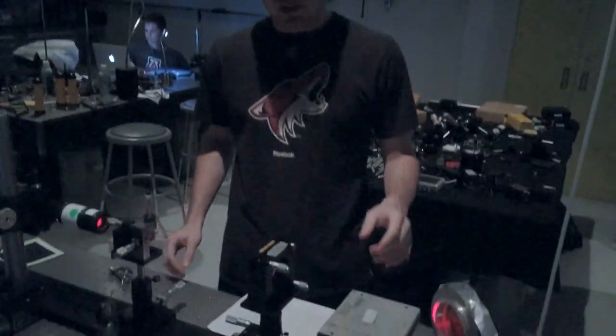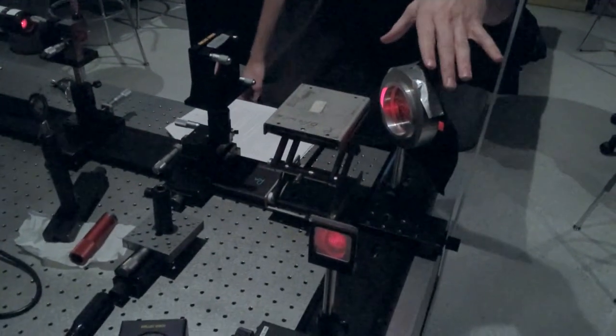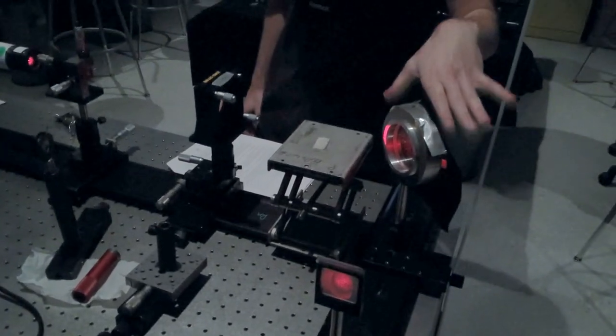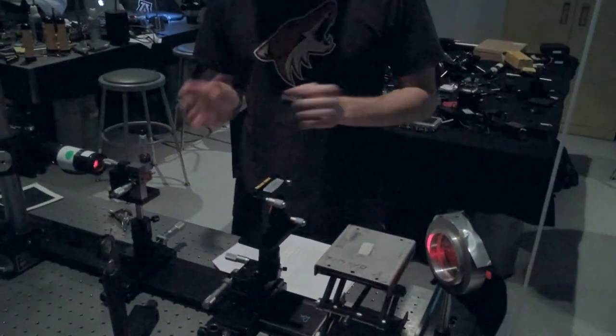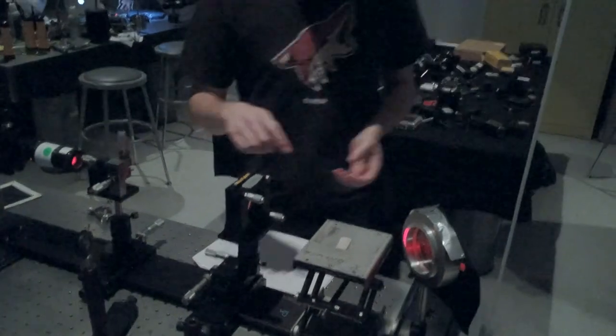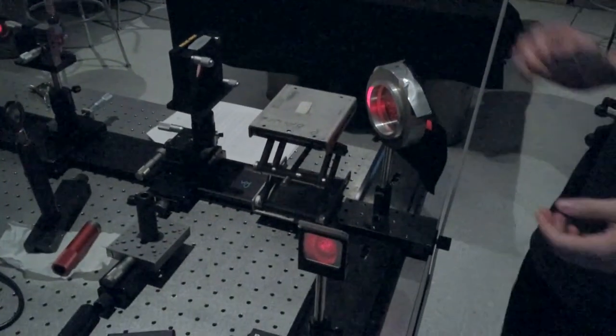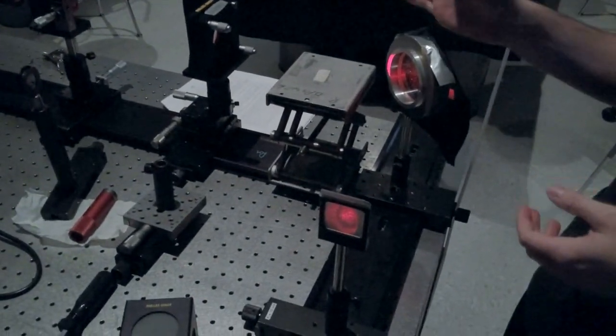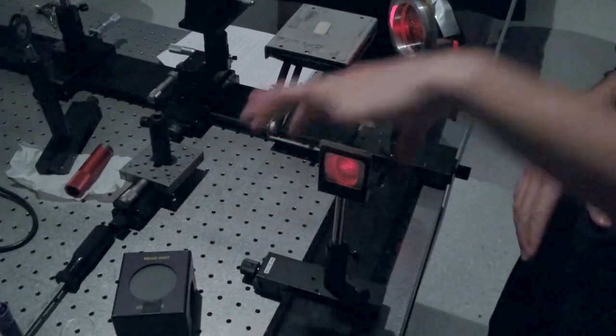Here's our setup for using a non-wedge shear plate interferometer, which is represented by this plane parallel plate. We have our HeNe spatial filter expanded to this collimating lens of 300 millimeters. Then it passes through the plane parallel plate, and we can observe the fringes on this viewing screen.